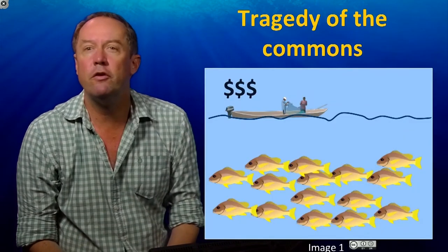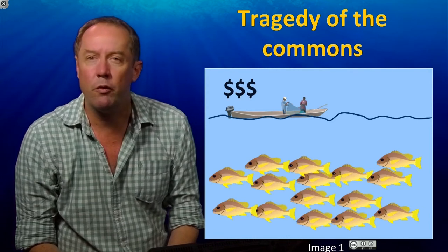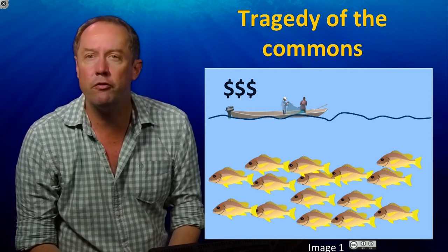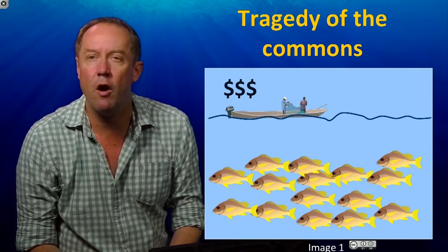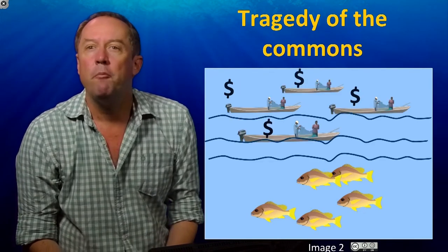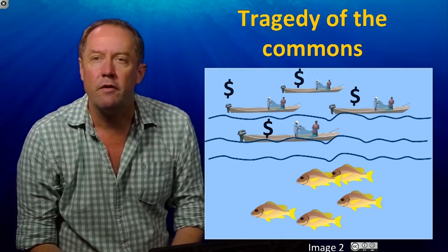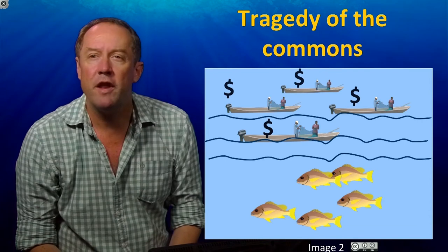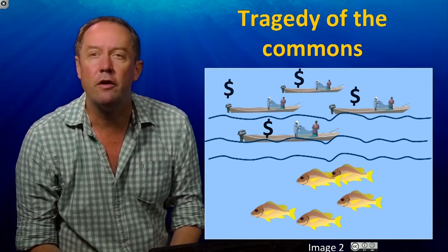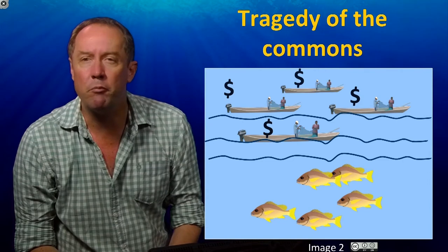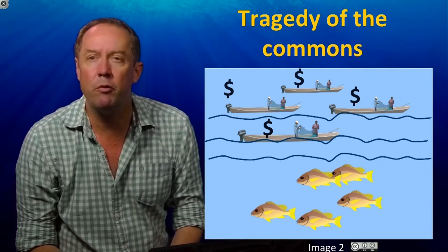Let's imagine somebody discovers a new fish population to exploit. There are lots of fish, and the first boat in the water makes a huge amount of profit because the biomass is so high. Because they're making a profit, a whole heap of other boats enter the fishery. They also make some money, but as they're entering the fishery, the effort is getting larger and the population is falling below that half carrying capacity where it's most profitable and sustainable.